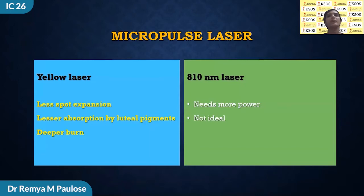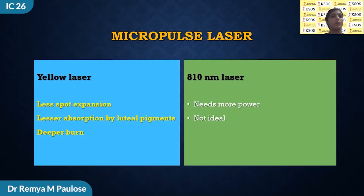Micropulse laser is known to reduce inflammation and evokes elimination of fluid due to RPE stimulation by production of cytokines and boosting pump activity of the retinal pigment epithelium. There are two different modalities of this laser technique: the yellow laser at 577 nanometers and another one. The 577 nanometer produces a more targeted burn with less laser spot expansion. There also seems to be an advantage of less luteal pigment absorption and potentially less risk when treating closer to the fovea. From the treatment standpoint, 577 nm wavelength may produce a deeper burn, allowing it to go below the level of the RPE to effectively treat choroidal-based pathologies including central serous retinopathy.